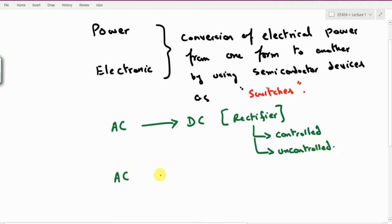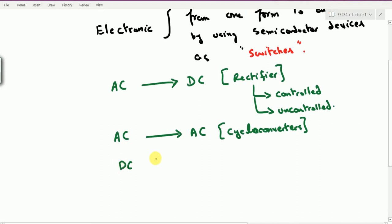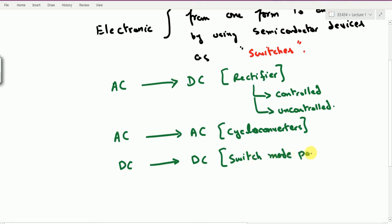It is also possible that we have an AC system converted into another AC system but with different frequencies and different voltages — such systems are known as cycloconverters. Another variation is that we have a DC system converted into a DC system but with different specifications. For instance, we have a 12-volt battery and we want to step up the voltage to some particular power output — that is known as DC to DC converters, or commonly we call them switched-mode power supplies. And the last one is that we have DC that we want to convert to AC, and we call them inverters.